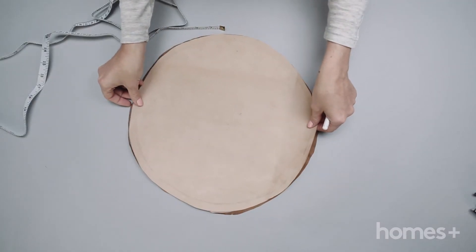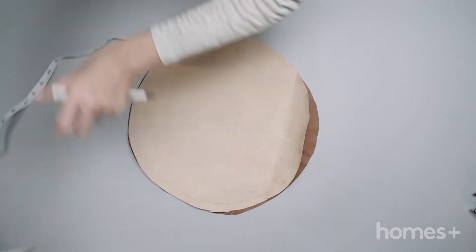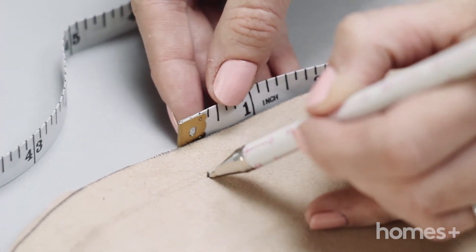Step 3: Place the measuring tape around the edge. Make a mark on every inch on the inner circle.